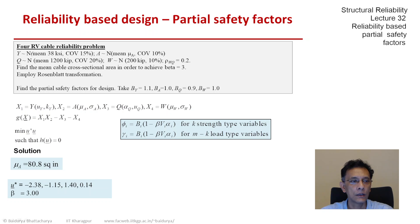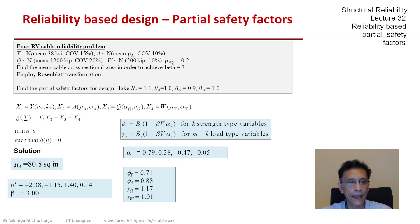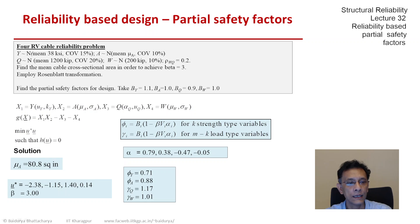We now need to find the partial safety factors from the equations derived in the previous slides. The bias factors b are given for all four variables. Beta was given as 3. The coefficients of variation have also been given in the problem statement. The alpha values are defined as the negative of u* over beta. That gives us the four alpha values, and using them in defining the safety factors, we have the four partial safety factors: the two strength-type quantities, 0.71 and 0.88, and the two load-type quantities, 1.17 and 1.01.